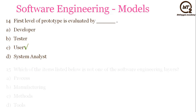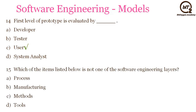The next question is: which of the items listed below is not one of the software engineering layers? Process, method, and tools are the layers of software engineering. So the answer will be B — manufacturing.